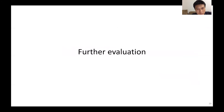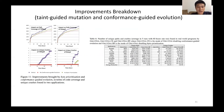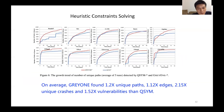To better understand the contribution of each component of GREYONE, we ran an ablation study. When using a traditional dynamic taint engine instead of FTI, code coverage was reduced to half. When disabling the taint-guided mutation strategy, GREYONE loses 14% unique paths and 42 unique crashes. When disabling conformance-guided evolution, GREYONE loses 21% unique paths and 63% unique crashes. Additionally, comparing GREYONE with QSYM as a hybrid constraint-solving fuzzer, GREYONE found 20% more unique paths, 12% more edges, and 50% more vulnerabilities.